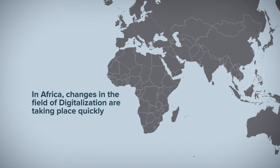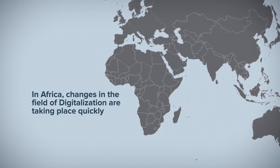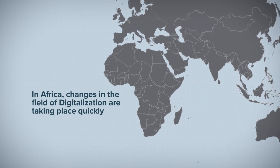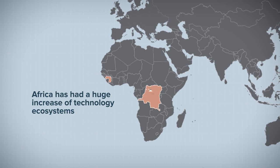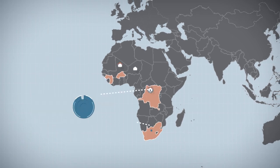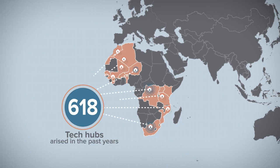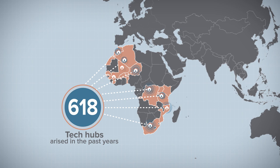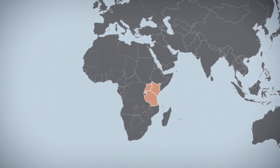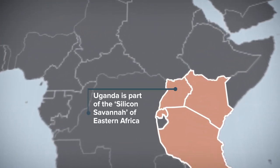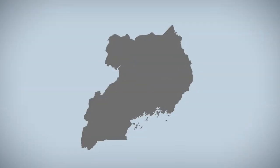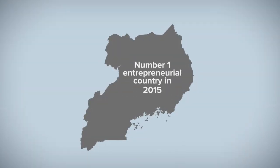In Africa, changes in the field of digitalization are taking place quickly. Africa has had a huge increase of technology ecosystems — 618 tech hubs have risen in the past years. Uganda is part of the Silicon Savannah of Eastern Africa and was selected as the number one entrepreneurial country in 2015.